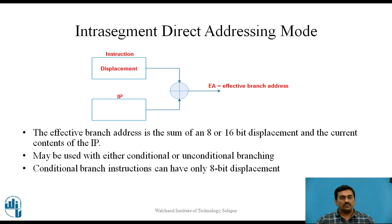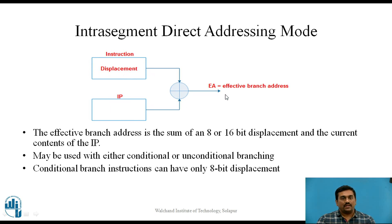The first addressing mode is intrasegment direct addressing mode. In this case the physical branching address is in the same segment where the branching instruction lies. The effective branch address is the sum of an 8-bit or 16-bit displacement and the current contents of the instruction pointer. This addressing mode may be used with either conditional or unconditional branching. If used for conditional branch instructions, it can only have 8-bit displacement.